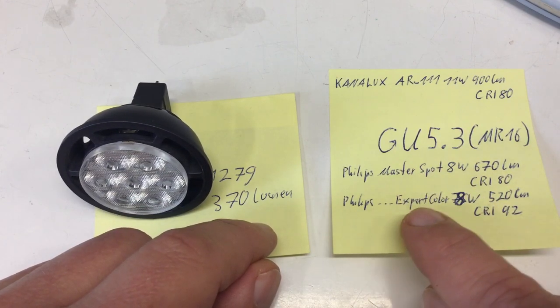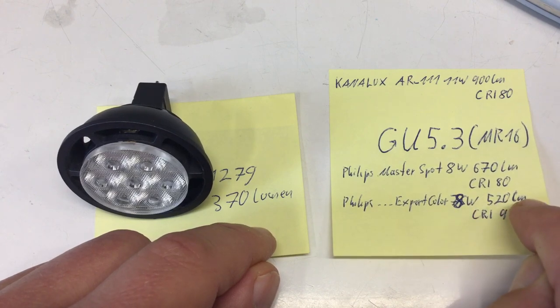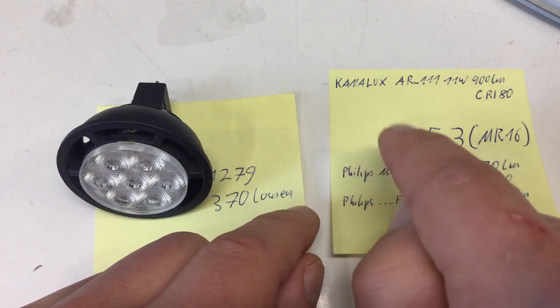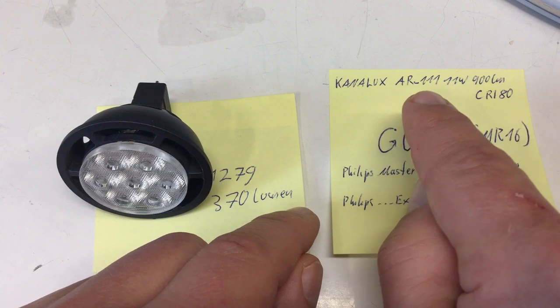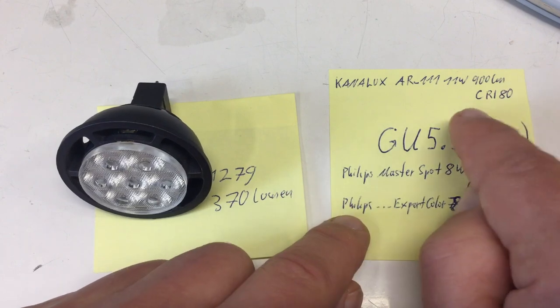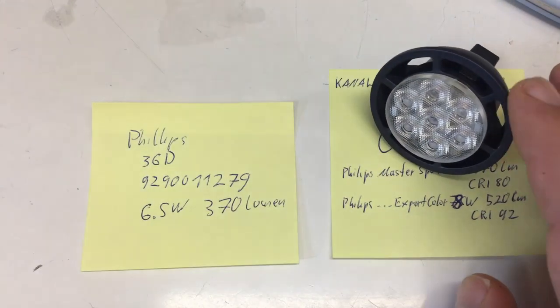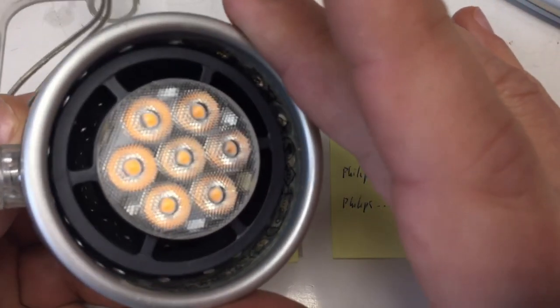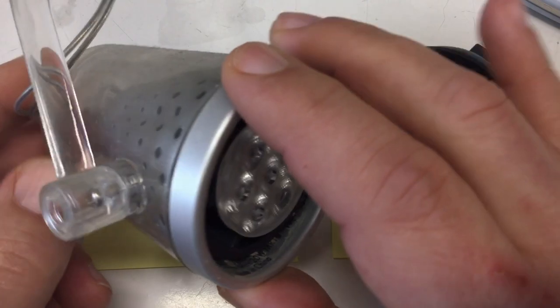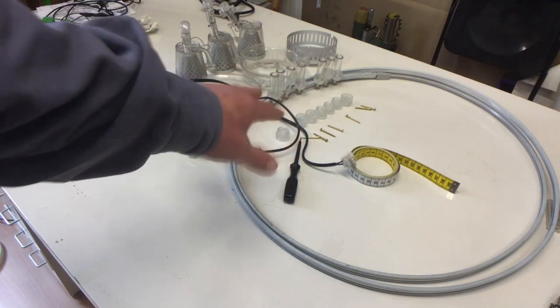If you want a color rendering index of 92 or something, you need to go for the Philips Master Spot Expert Color, also available in 8 watts, but just 520 lumens. And if you want a lot of lumens, there are also some exotics out there. I found a Canalux AR111 with 11 watts and 900 lumens. Again, color rendering index just 80. And I also found that on eBay, you can get still parts used or new old stock for that IKEA Magnesium lighting system. But of course, the question arises, does it still work? Let's find out.